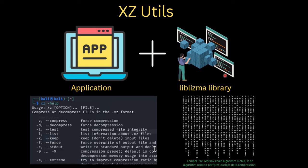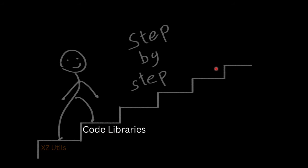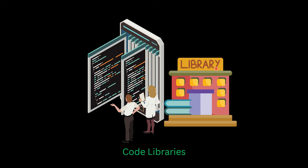Now let's understand what code libraries are, since liblzma is the library that was compromised. Code libraries are pre-written code available for developers to use. These libraries are maintained by communities or companies. One key benefit is efficiency: since libraries provide pre-written code, developers can use them instead of writing everything from scratch, saving time and effort, allowing them to focus on the unique aspects of their applications.